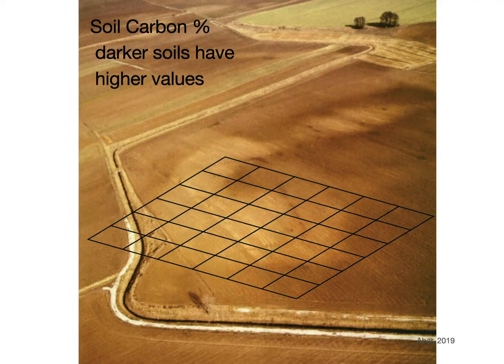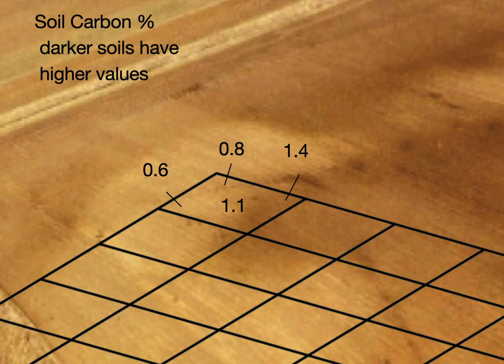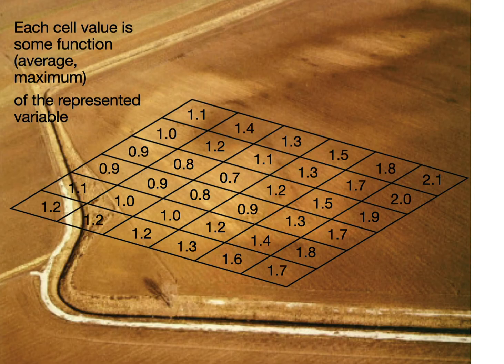Here's an example where we have the percent soil carbon we're mapping. You can see the variation across the landscape. Darker areas have higher soil carbon, associated with fertility. If I look at a cell and sample from within the cell for my raster data set here, I might get values that vary across a range. I have some average value or highest value or some value that I assigned within that range, and I do that across all of my cells. There's variation within the cell and an average value reported or some value reported for the cell that's representative.